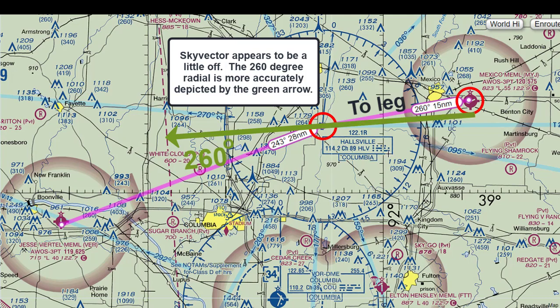Skyvector looks a little off on this in the image here, but if you extend the line through the VOR to the other side as we have been doing in the other videos, you can see the line goes through to 260 degrees. The line I have drawn is more accurate than what Skyvector is showing on the far side of the VOR.